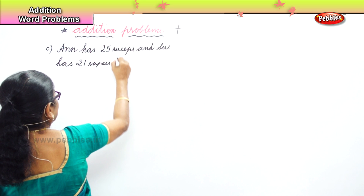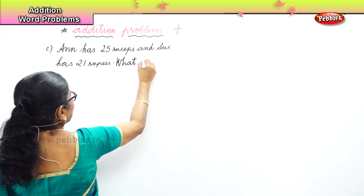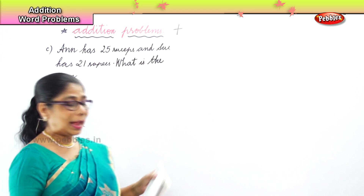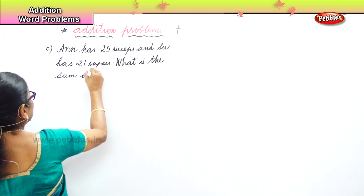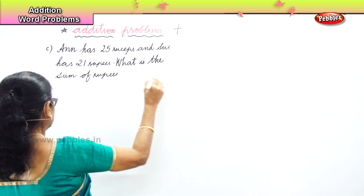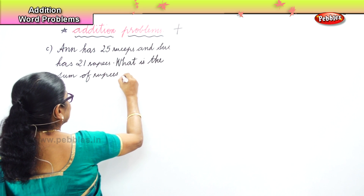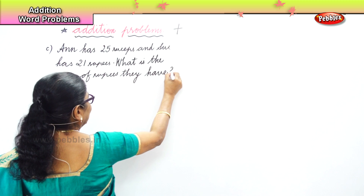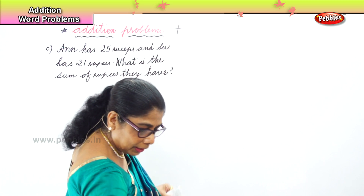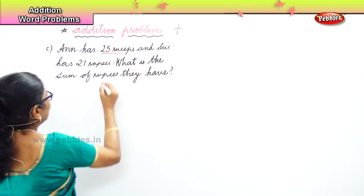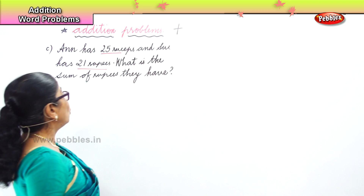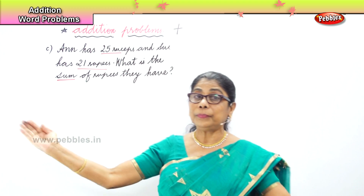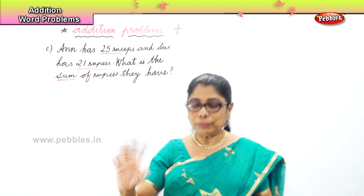What is the sum? When you look at the word 'sum', you know you have to add. What is the sum of rupees they have? Both have together. That's the question. Anne has 25 rupees, Sue has 21 rupees — 'sum' is the word we are looking at. What is the sum of rupees they have both together?